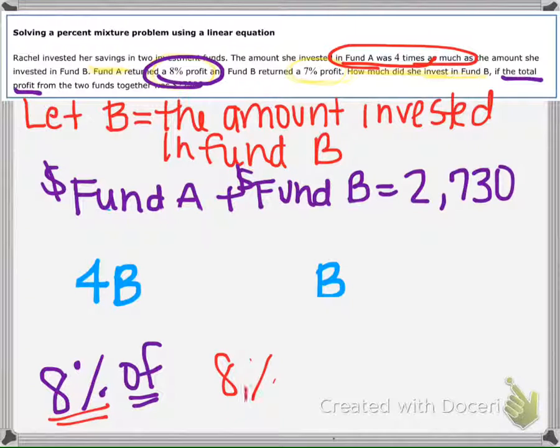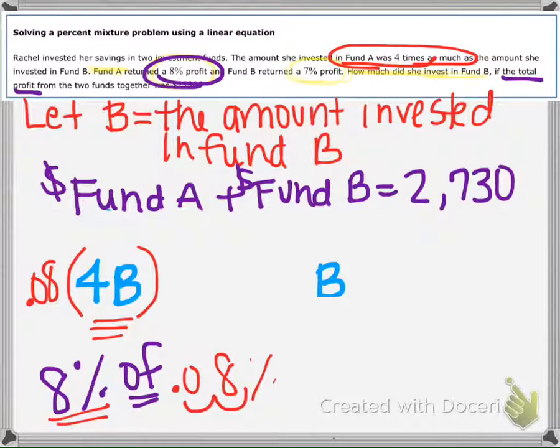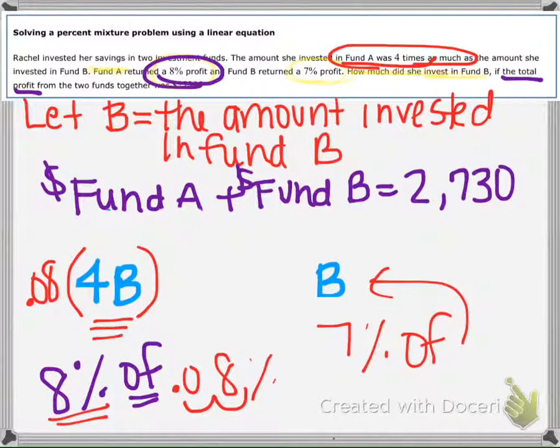We have to change 8% to a decimal by moving the decimal over to the left two times. So Rachel's going to earn 8% of this amount here.